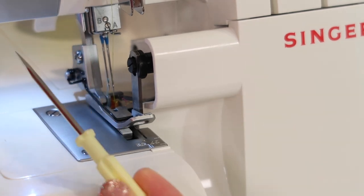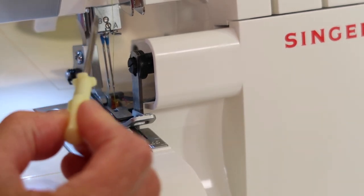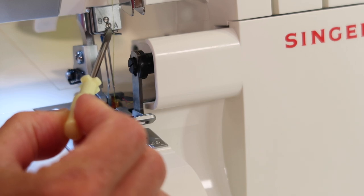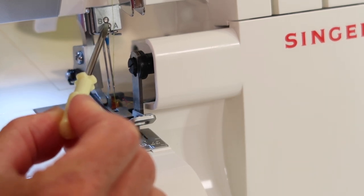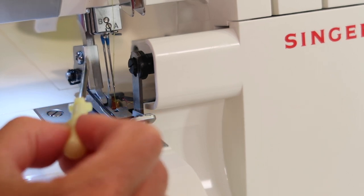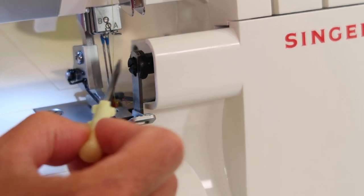Next take the screwdriver that came with this machine, and you'll notice that there is a B and an A next to the screws. The B screw is for the left needle, and the A screw is for the right needle.